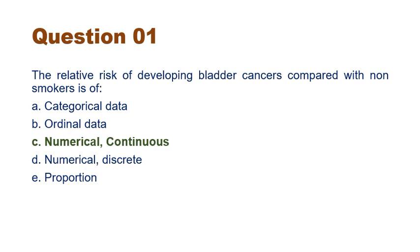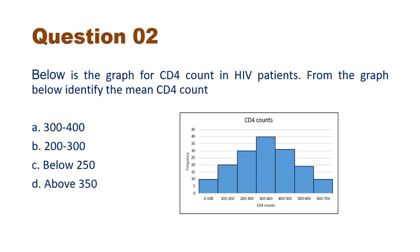The next question: we have a graph of CD4 count in HIV patients and we have to tell the mean CD4 count on the basis of this graph. This graph is a histogram. Histograms are connected bars used to represent continuous data. And if we look at the graph, we can see that the graph is looking very much symmetrical around the central value.